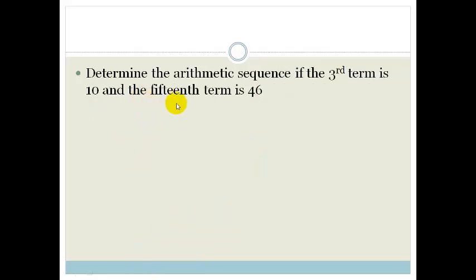Another example. It says determine the arithmetic sequence if the third term, T3, is 10, and the 15th term, T15, is equal to 46. Sure. So that's a little bit tricky. So let's think about this.